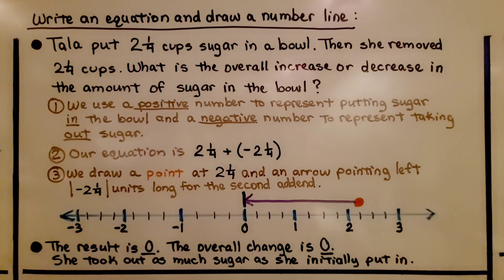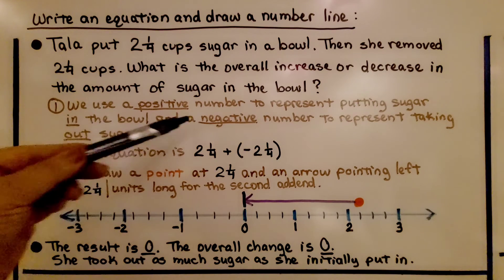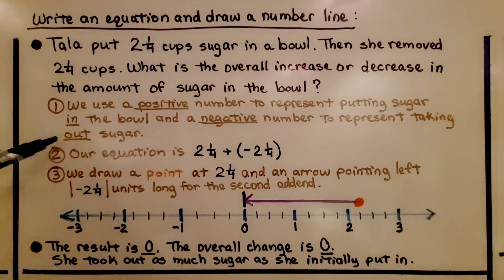Here we need to write an equation and draw a number line. Tala put 2 and 1/4 cups sugar in a bowl, then she removed 2 and 1/4 cups. What is the overall increase or decrease in the amount of sugar in the bowl? We use a positive number to represent putting sugar in and a negative number to represent taking it out.